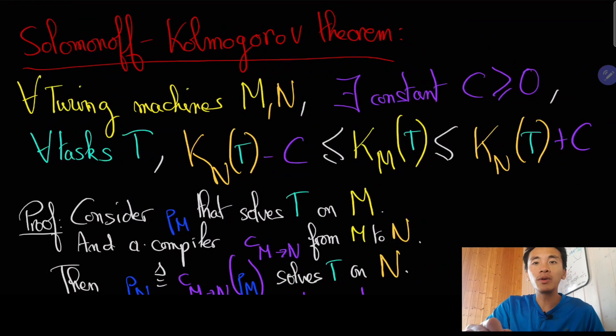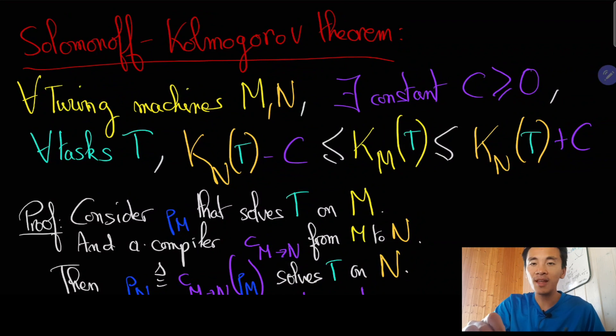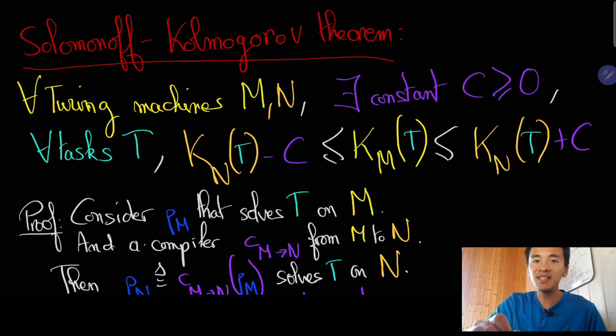In particular, this means that when we consider tasks T whose complexity is large enough, typically in the billions or in the trillions, then the Solomonoff-Kolmogorov complexity K(T) will be essentially independent from the universal Turing machine it is defined on. This is what makes this measure so relevant to understand the challenges of modern computer science and the naturalness of Solomonoff's induction.